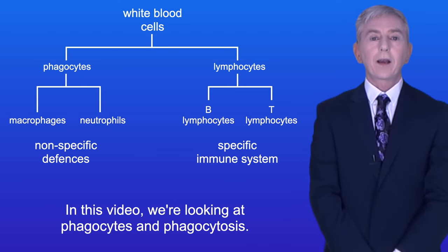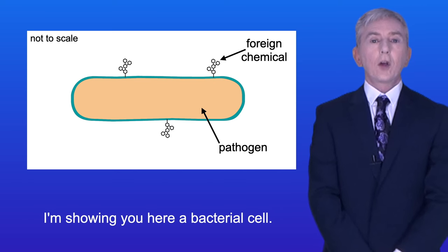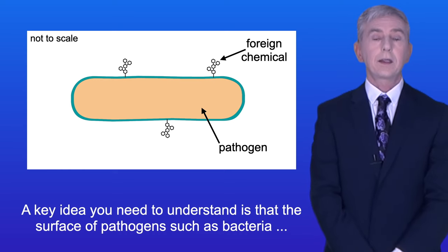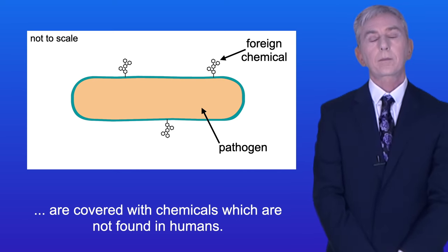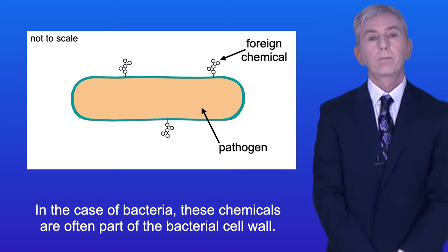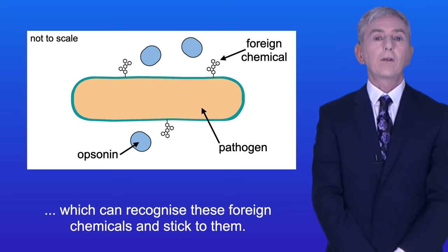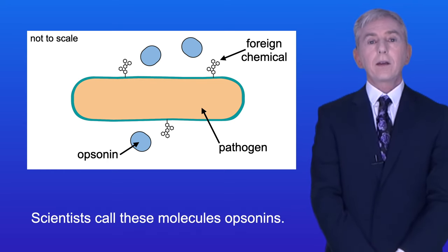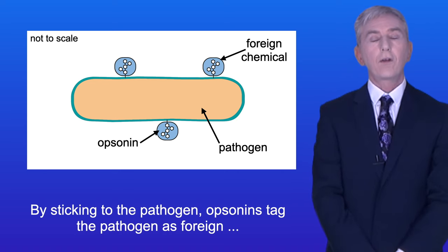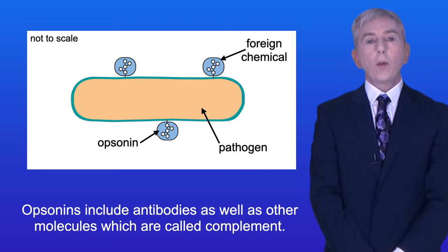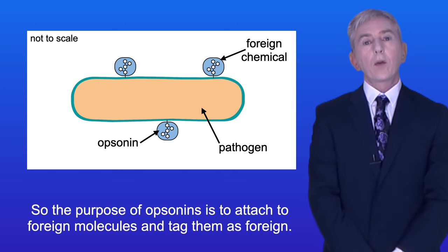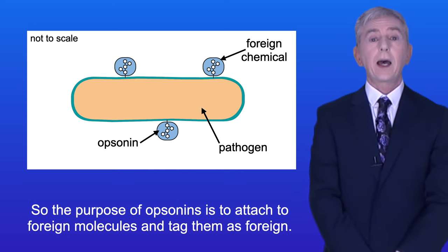In this video we're looking at phagocytes and phagocytosis. A key idea is that the surface of pathogens such as bacteria are covered with chemicals which are not found in humans. In the case of bacteria these chemicals are often part of the bacterial cell wall. Your blood contains special molecules which can recognize these foreign chemicals and stick to them — scientists call these molecules opsonins. By sticking to the pathogen, opsonins tag the pathogen as foreign. Opsonins include antibodies as well as other molecules called complement.